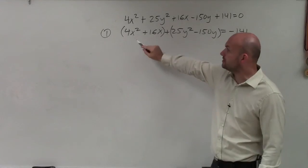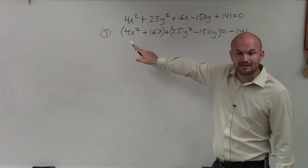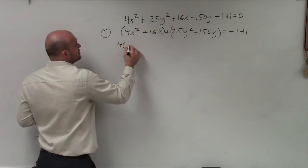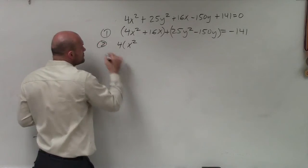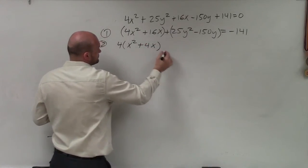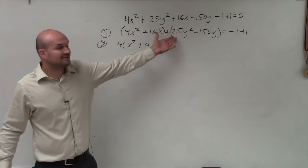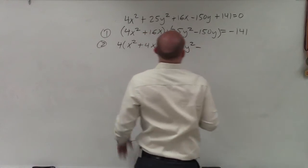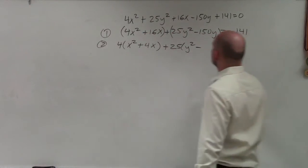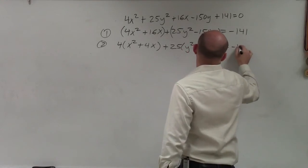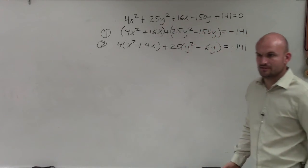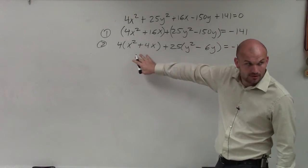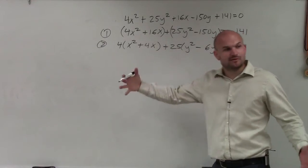And if you remember the steps of completing the square, I cannot have a coefficient of anything else than 1. So I'm going to factor out a 4. So therefore, I have x squared plus 4x plus, over here, I can factor out a 25. Does everybody see what I did? I just factored out that number. I did not factor out my variables. Because now I have a binomial that I want to create into a perfect square trinomial.